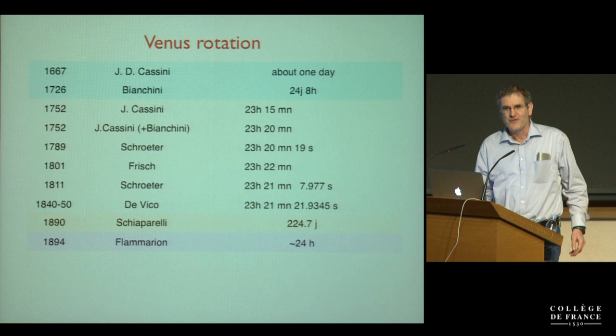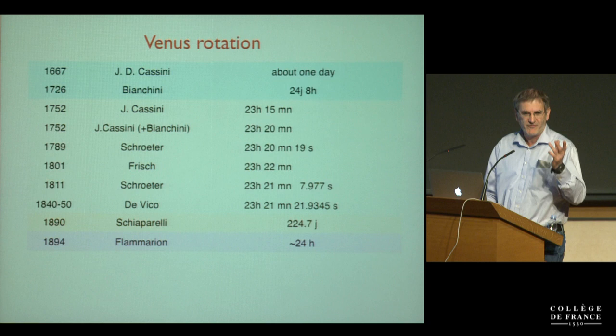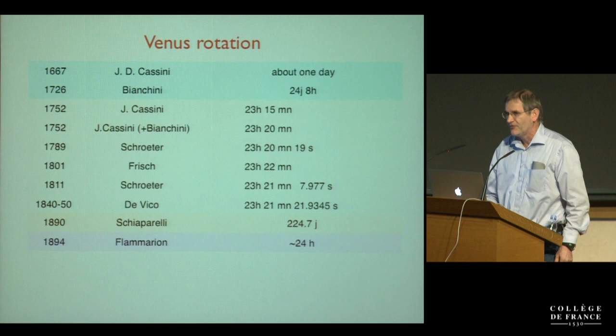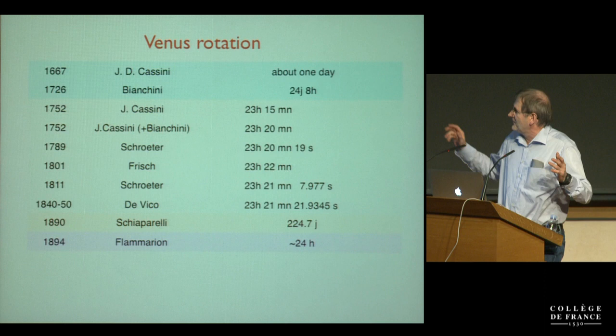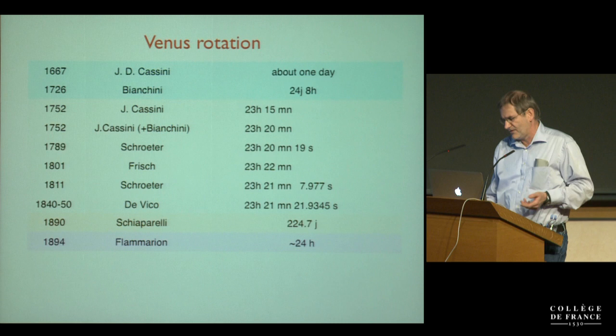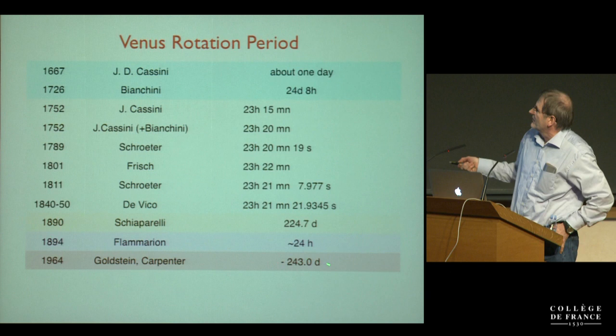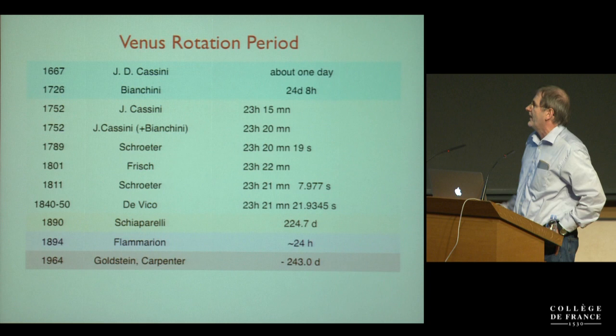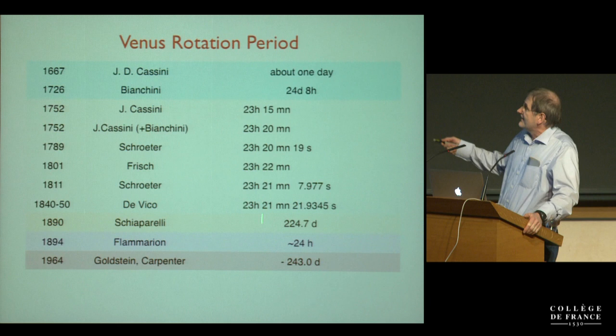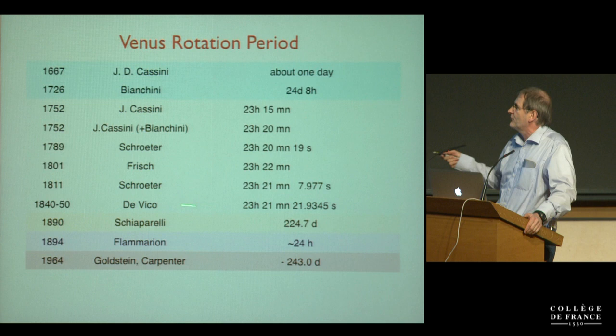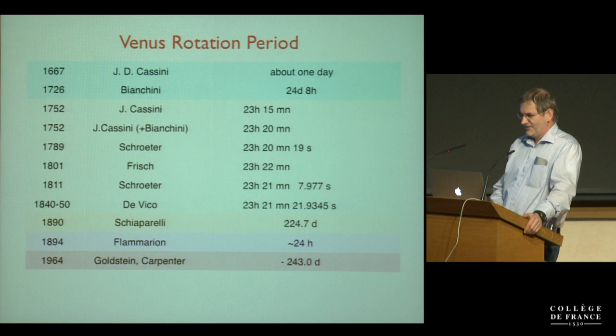Other observers like Flammarion found again 24 days, and even published pictures of Venus with ice caps. So there was a big controversy, and finally the measurement was only settled when it became possible to measure it directly by radar observation in the 1960s. The solution was that Venus was very slow rotating and also retrograde, with minus 243 days. Everybody was wrong, and I would say the one who came closest was Chiaparelli with his theoretical prediction — so beware of observation.